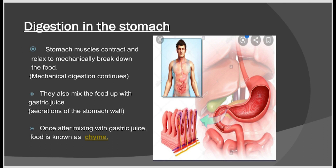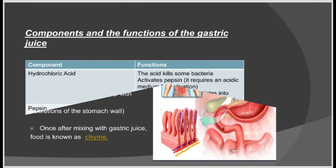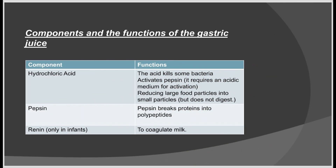The stomach is a dilated, sac-like organ. Due to the peristaltic activity of its muscles, the bolus is further subjected to mechanical digestion and broken into smaller pieces, then mixed with secretions from the stomach wall to form chyme. Gastric juice is composed of hydrochloric acid, and the enzymes pepsin and rennin. HCl activates pepsin and also kills some bacteria. The enzyme pepsin breaks proteins into polypeptides, so protein digestion begins in the stomach. Rennin, present in infants, causes coagulation of milk. Food remains in the stomach for 4–5 hours.